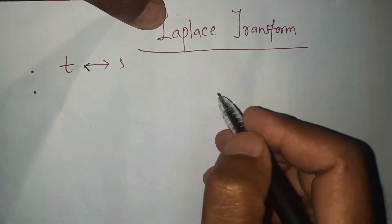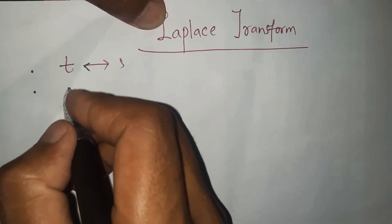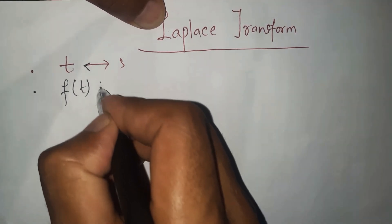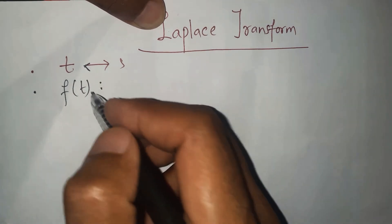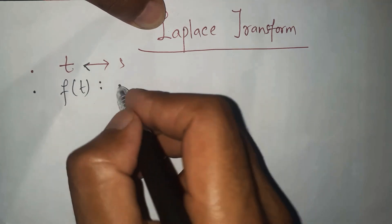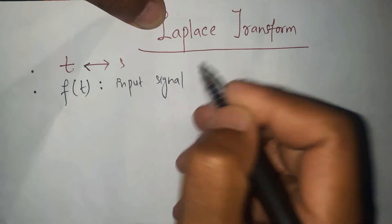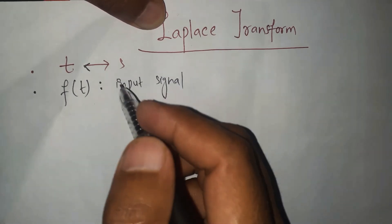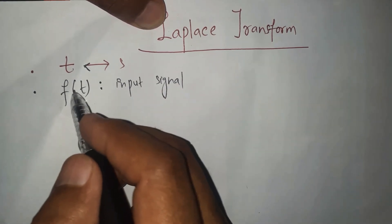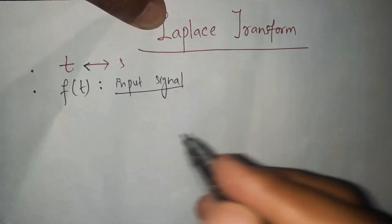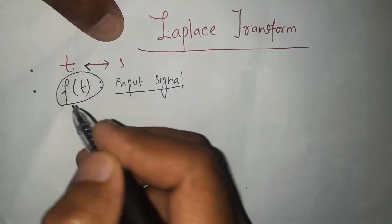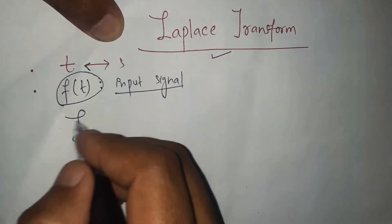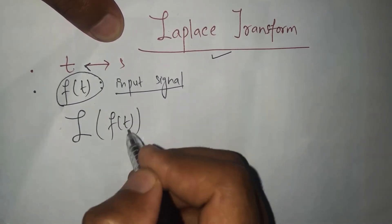Now let's look at the basic definition of the Laplace transformation. Let's take a signal f(t), which is a time-variable, time-dependent input signal. We are going to apply the Laplace transformation to it. The signal f(t) is in the time domain, and we plug it into the Laplace transformation machine — this symbol is the notation of the Laplace transformation.